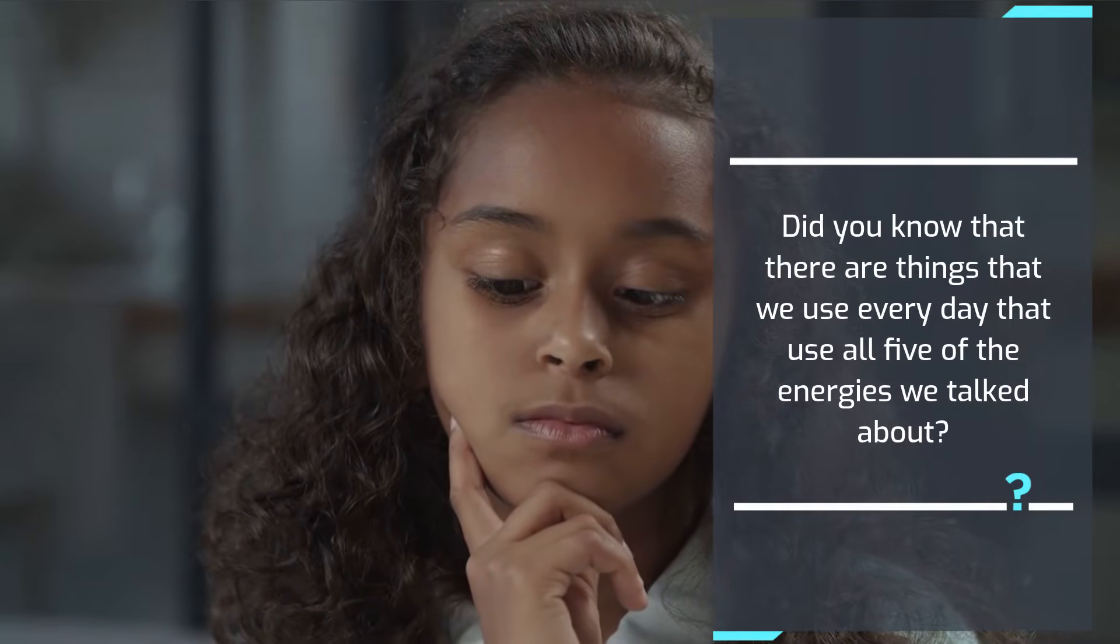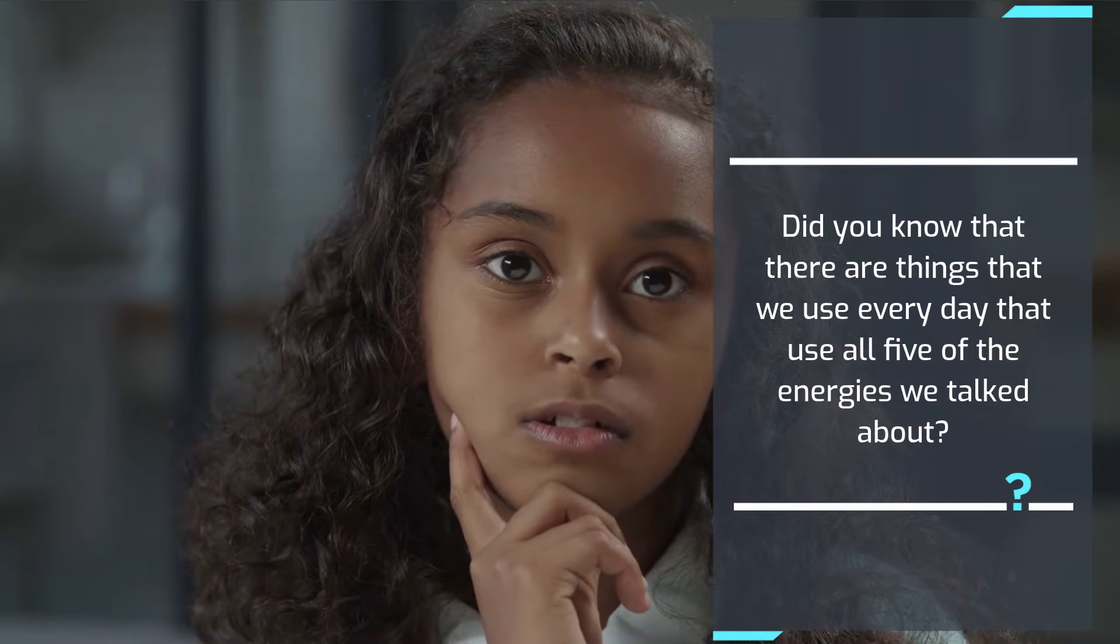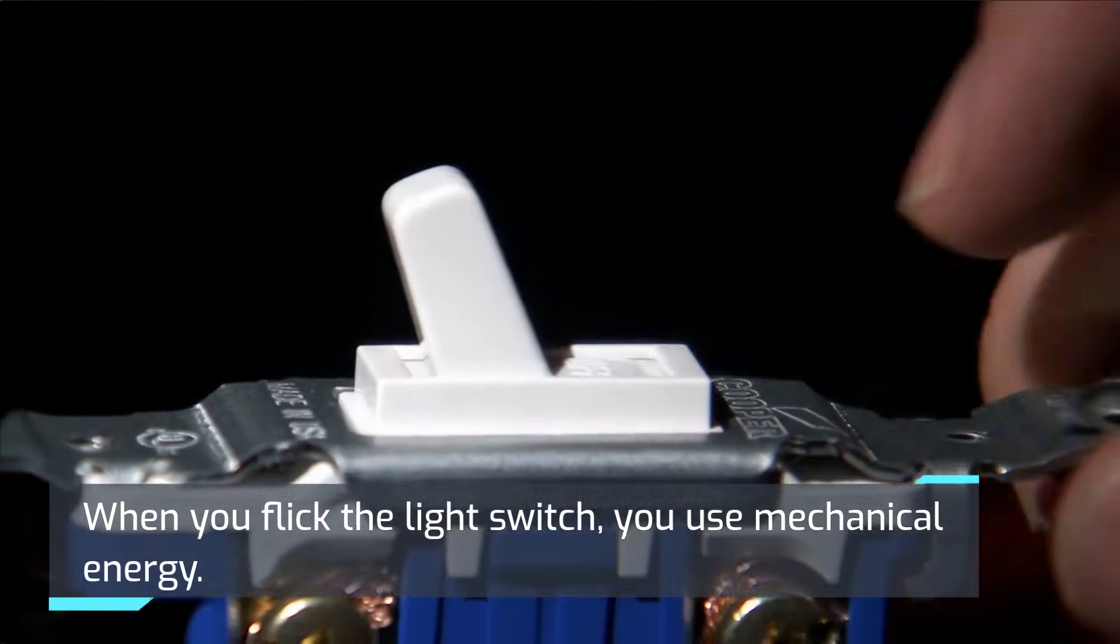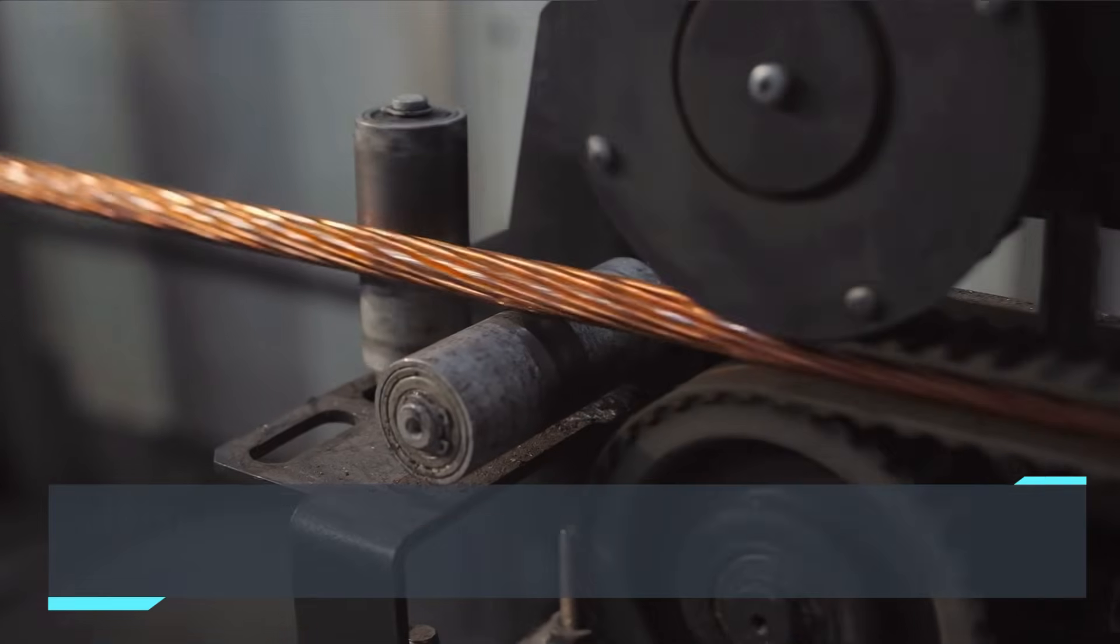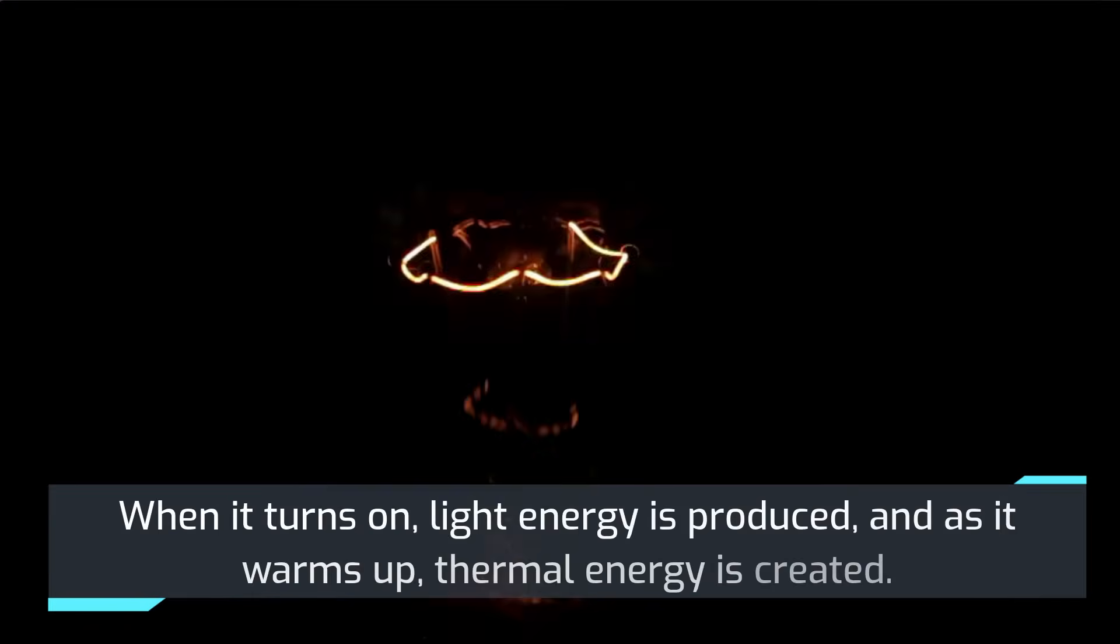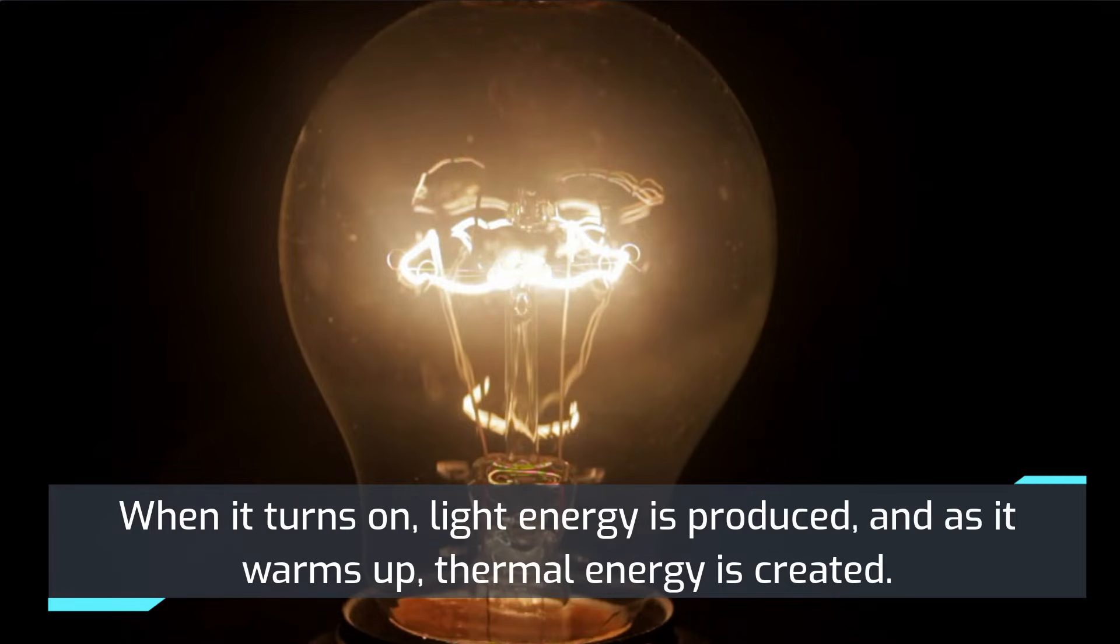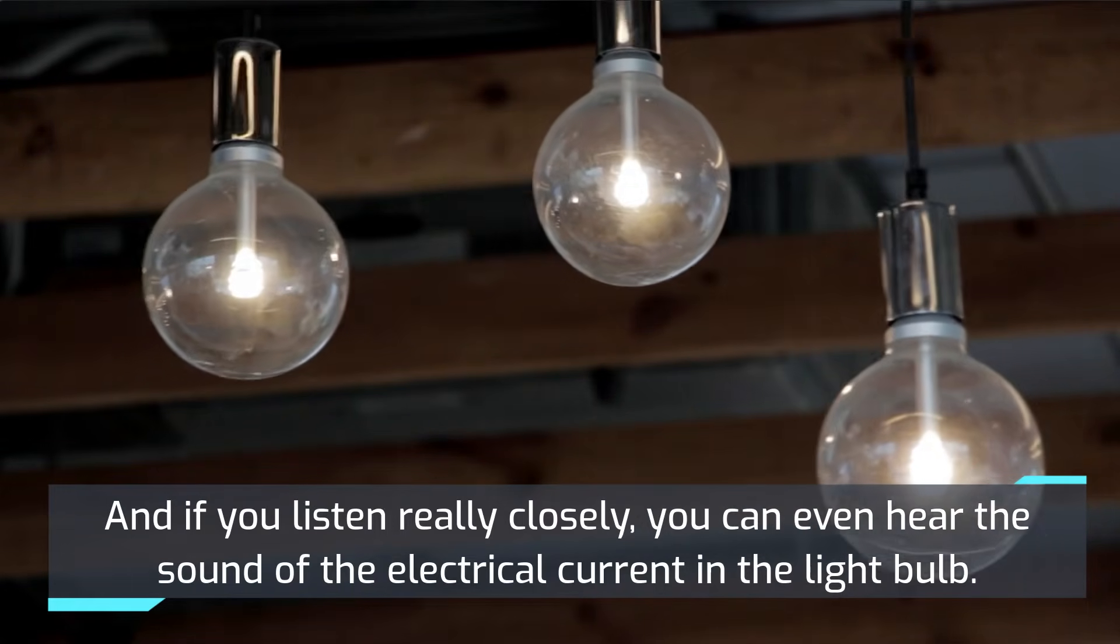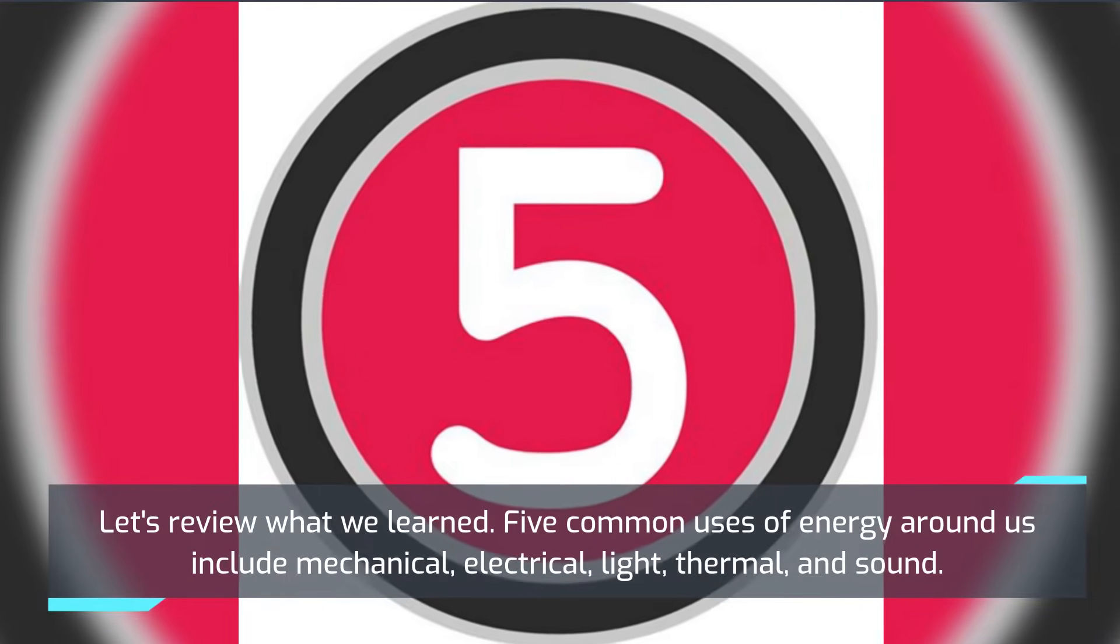Did you know that there are things that we use every day that use all five of the energies we talked about? A light bulb is an example. When you flick the light switch, you use mechanical energy. Then the electrical energy runs through the wires and reaches a light bulb. When it turns on, light energy is produced. And as it warms up, thermal energy is created. And if you listen really closely, you can even hear the sound of the electrical current in the light bulb.